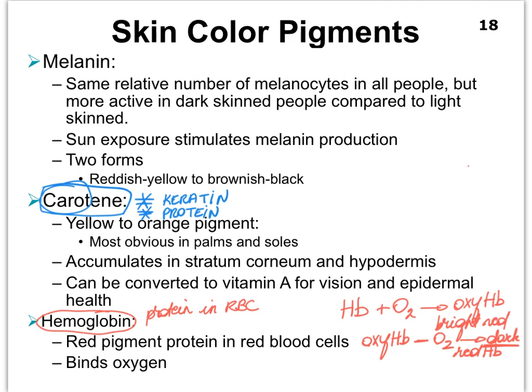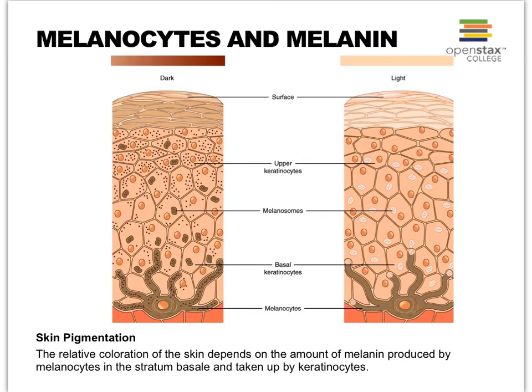This wraps up our discussion for video 5D. As a final reminder: dark-skinned and light-skinned people have about the same number of melanocytes. In light-skinned people the melanocytes are not very active and deposit fewer melanin granules inside the keratinocytes, compared to dark-skinned people where much more melanin is deposited inside the keratinocytes — that's what creates the difference in skin color, and it is all genetically coded. This is the end of video 5D.